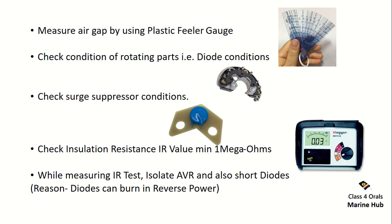Check the condition of the rotating parts — that is, the diodes condition — whether they are burnt or in a bad state. Also check the surge suppressor condition, shown in the photo as a blue-colored surge suppressor. Next, measure the insulation resistance — the minimum IR value is 1 mega ohm. Make sure while measuring the IR test, always isolate the AVR and also short the diodes, as reverse power could otherwise burn the diodes.